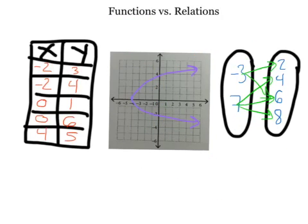Here we have another set of relations. We have a table, a continuous graph, and a mapping diagram. These are all relations, but they are not functions, because every input does not have exactly one output — some of these inputs have more than one output that they are paired with.